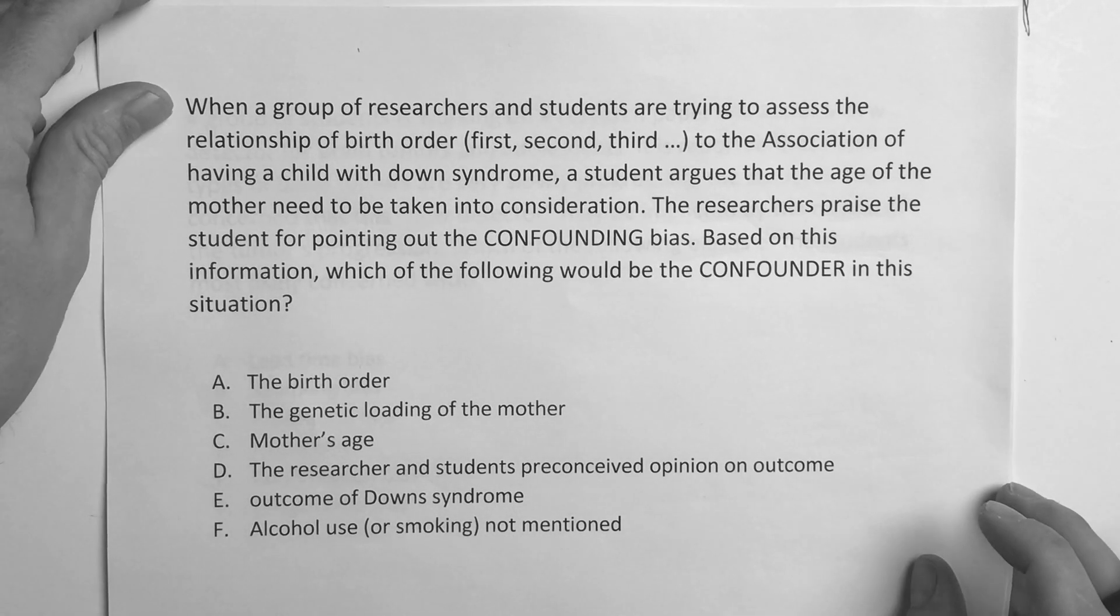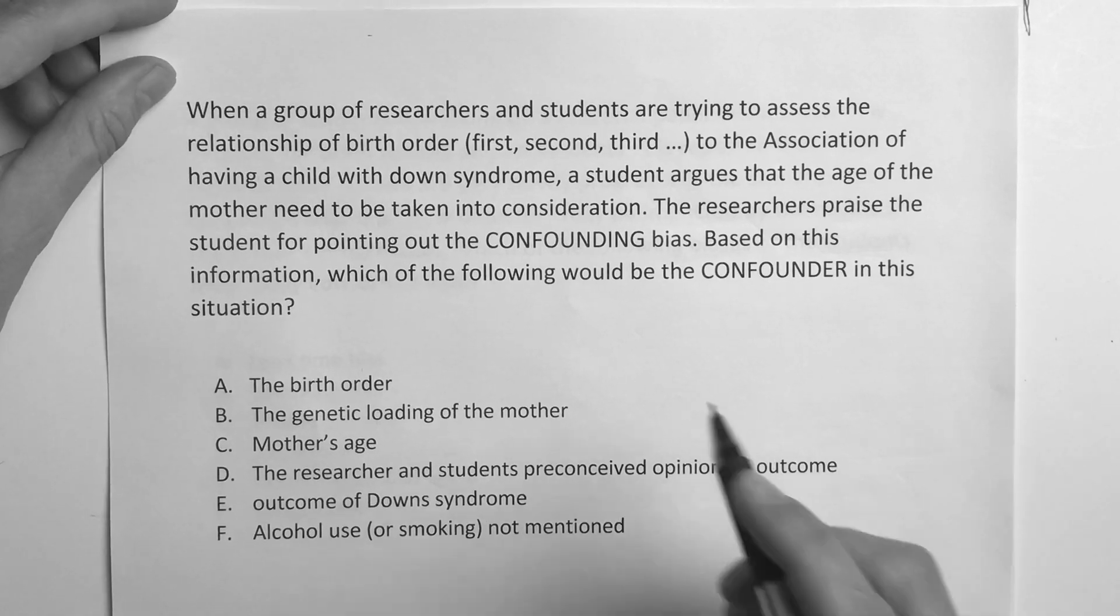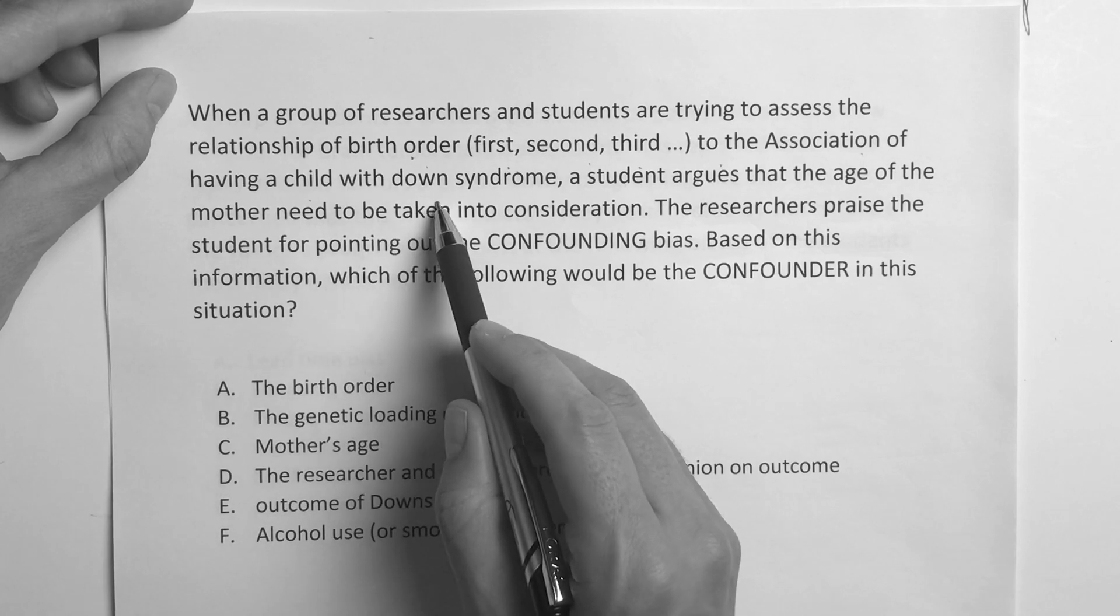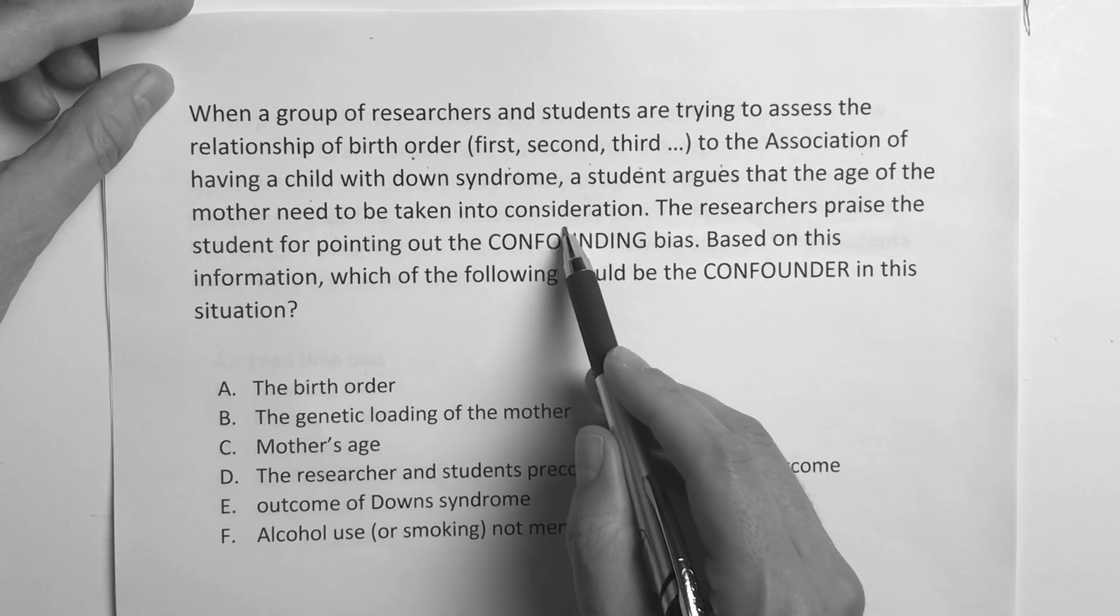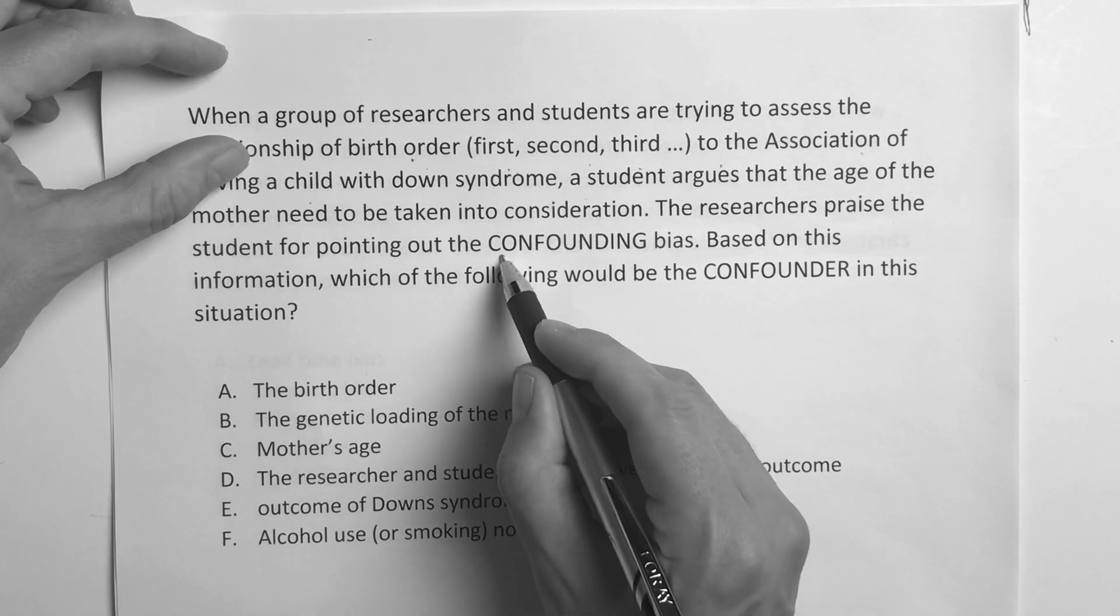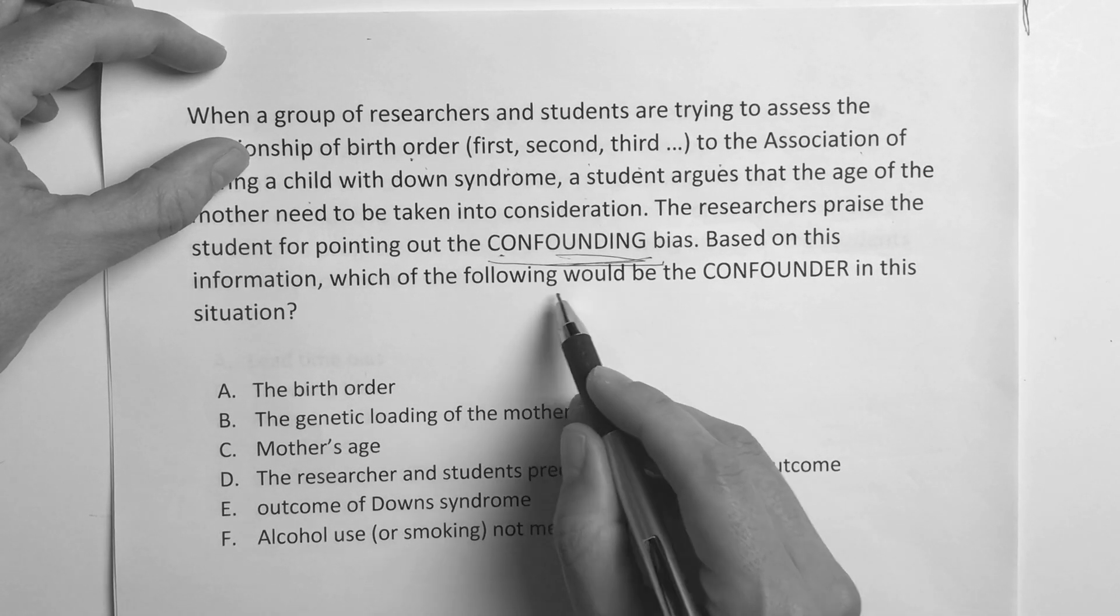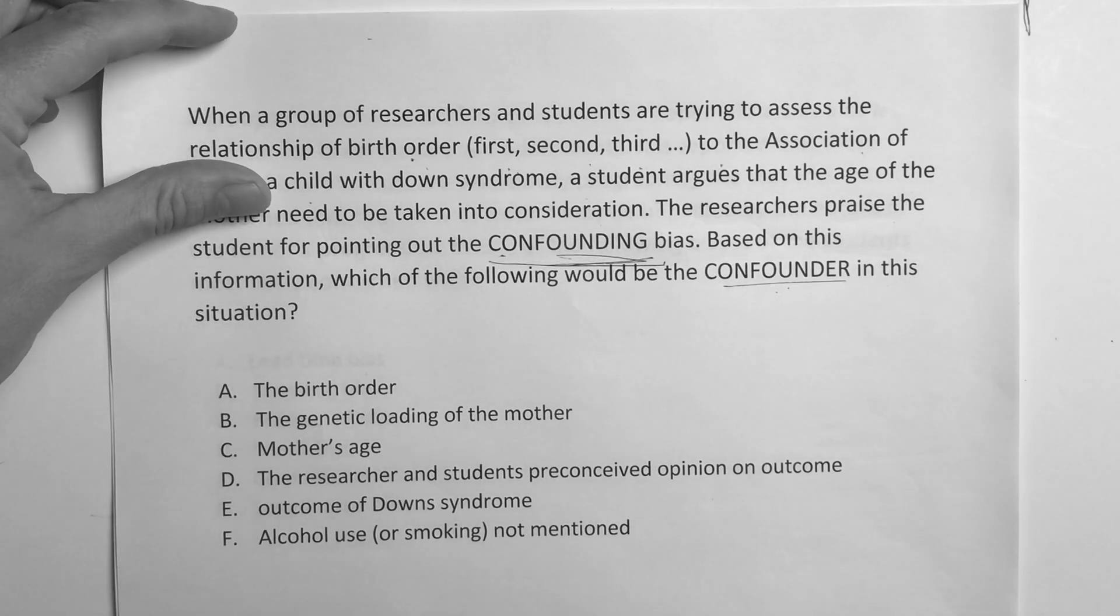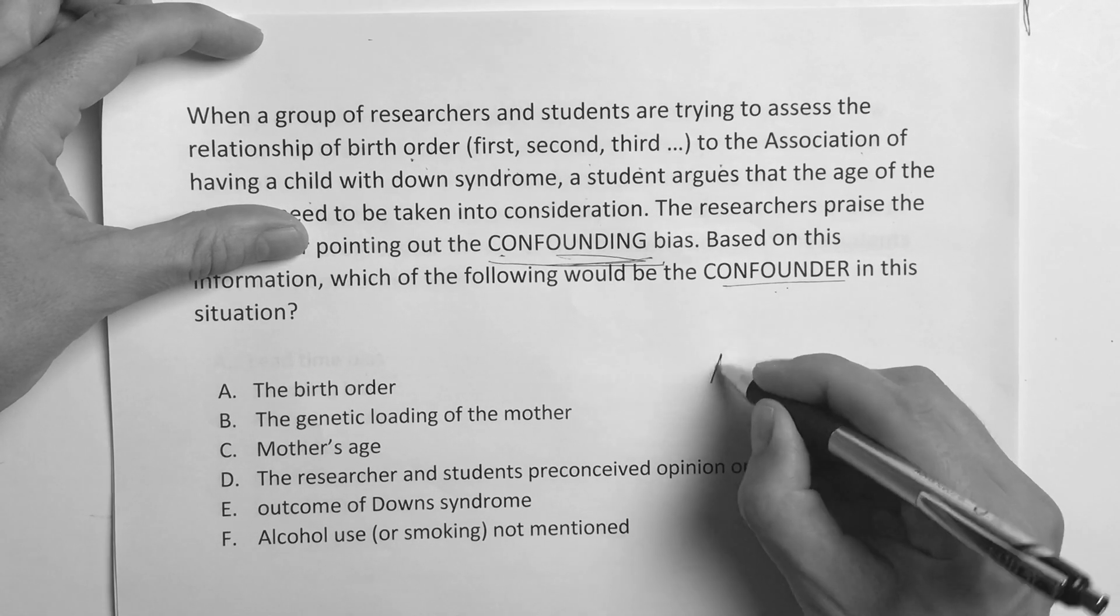It says, when a group of researchers and students are trying to assess the relationship of birth order, whether it's first, second, or third, to the association of having a child with Down syndrome, a student argues that the age of the mother needs to be taken into consideration. The researchers praised the student for pointing out the confounding bias. Based on this information, which of the following would be the confounder in this situation? So we have to understand what this whole confounder stuff is.